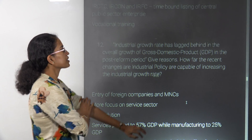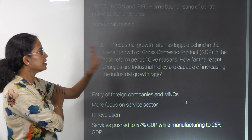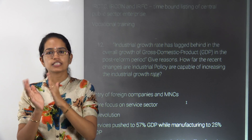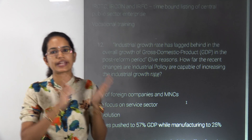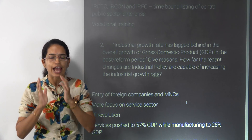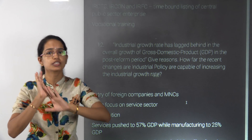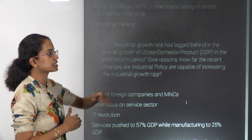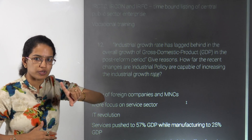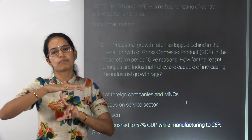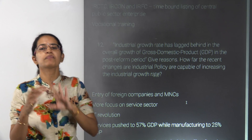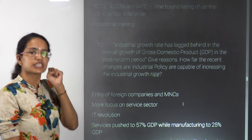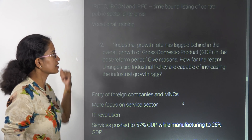The next question is very important: industrial growth rate has lagged behind the overall growth of GDP in the post-reform period. After 1991, there was a strong thrust onto the service sector, with nearly 57% of GDP coming from services and only 25% from manufacturing. Other reasons include lack of human resource development, more labor-intensive industries, lack of entrepreneurship, and stringent labor laws that pushed back growth from the industrial sector.